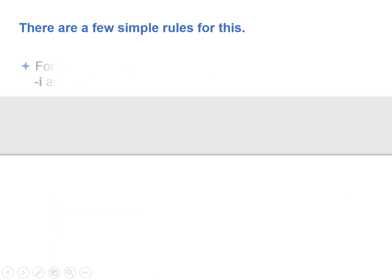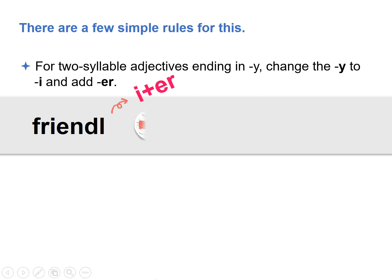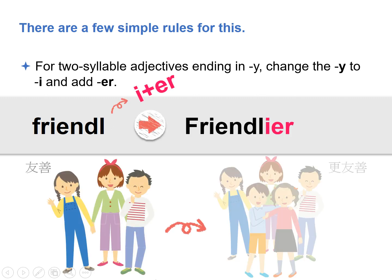For two-syllable adjectives ending in Y, change the Y to I and add ER. For example: friendly becomes friendlier.